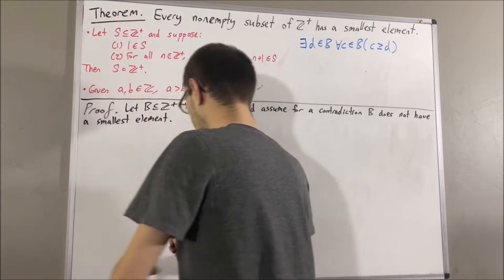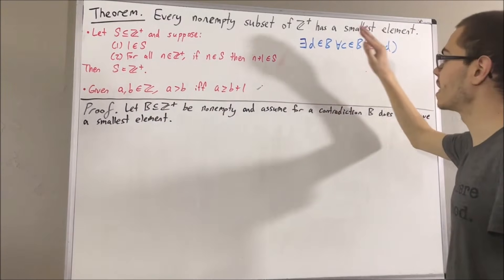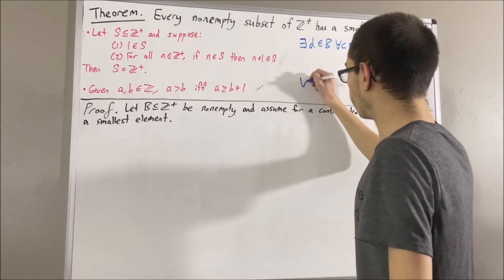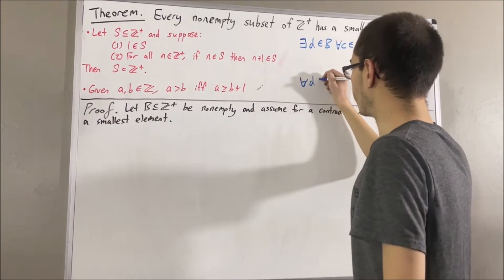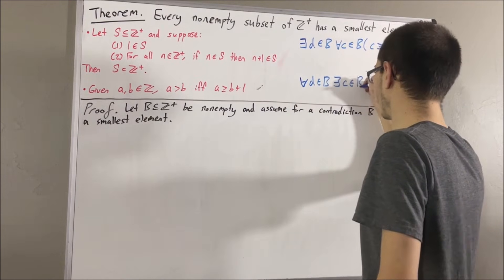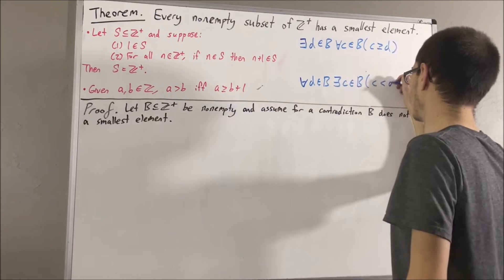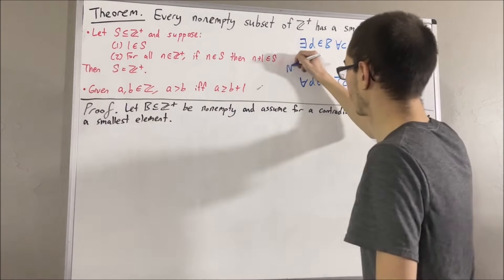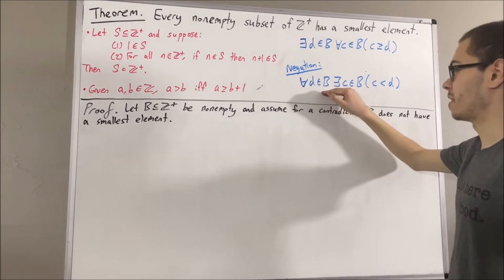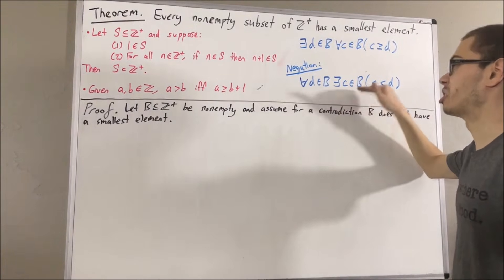In other words, we are assuming that the negation of this statement is true. The negation of this statement is: for all d in B, there exists an element c in B such that c is less than d. In other words, if you give me any element of B, then I guarantee you that I can find an element in B smaller than it.